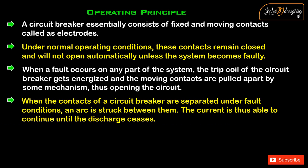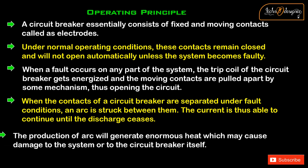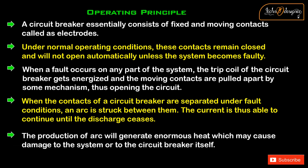When the contacts of a circuit breaker are separated under fault conditions, an arc is struck between them, and the current is thus able to continue until the discharge ceases. The production of arc will generate enormous heat which may cause damage to the system or to the circuit breaker itself.